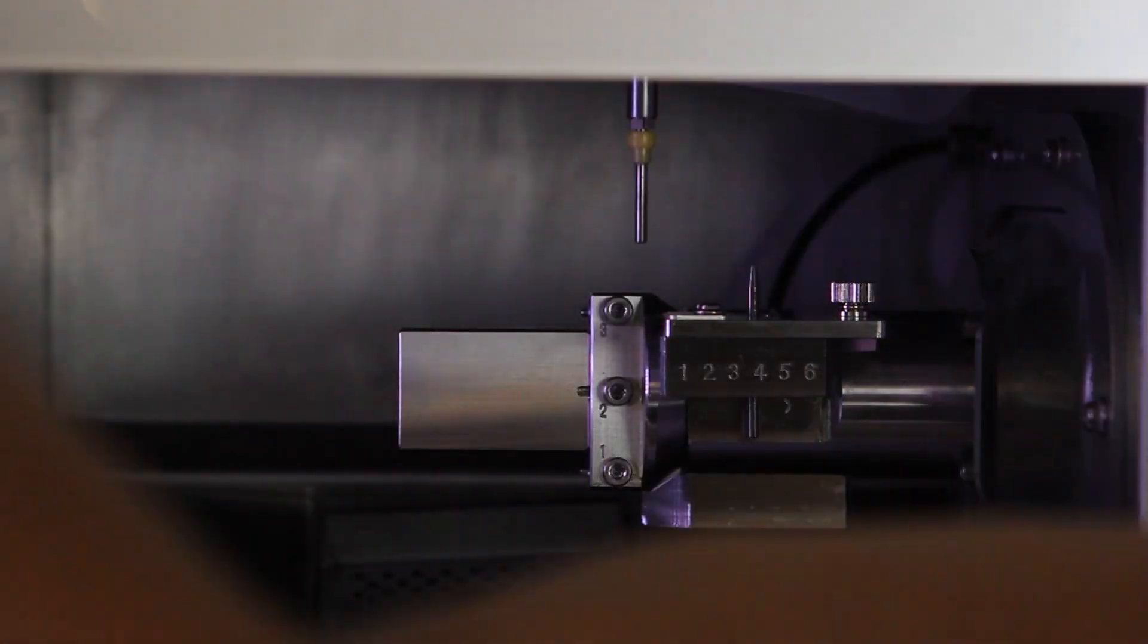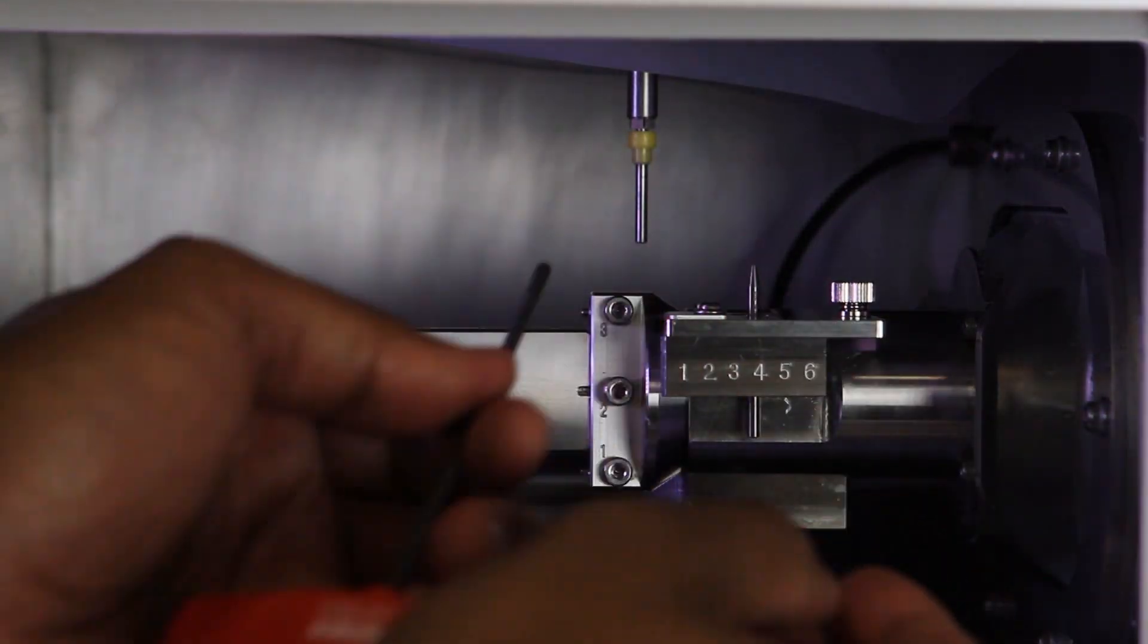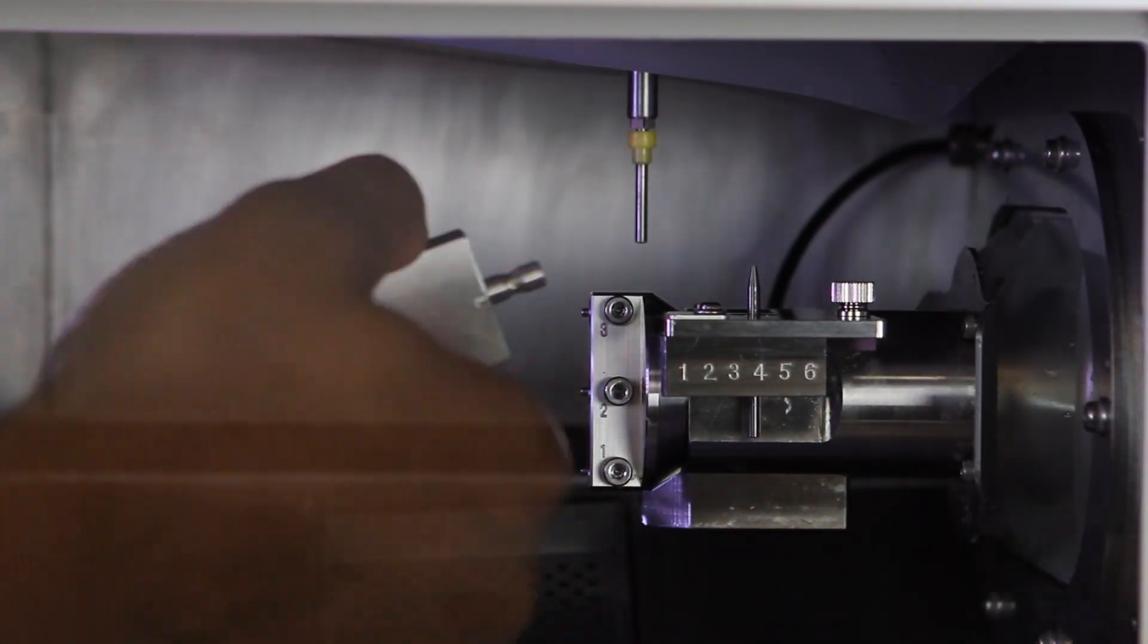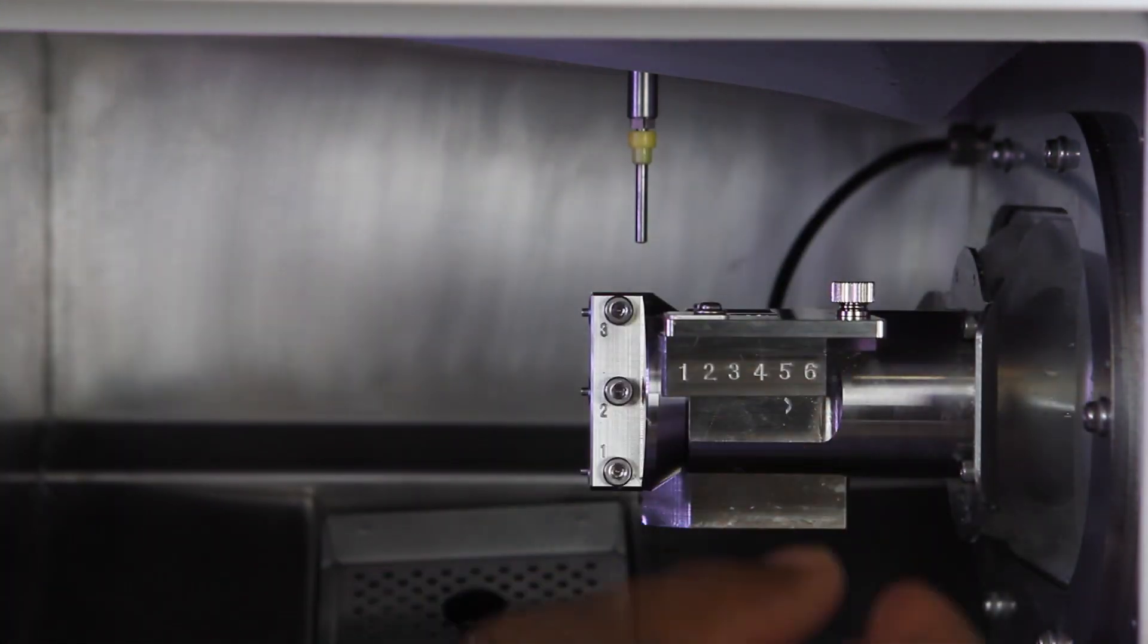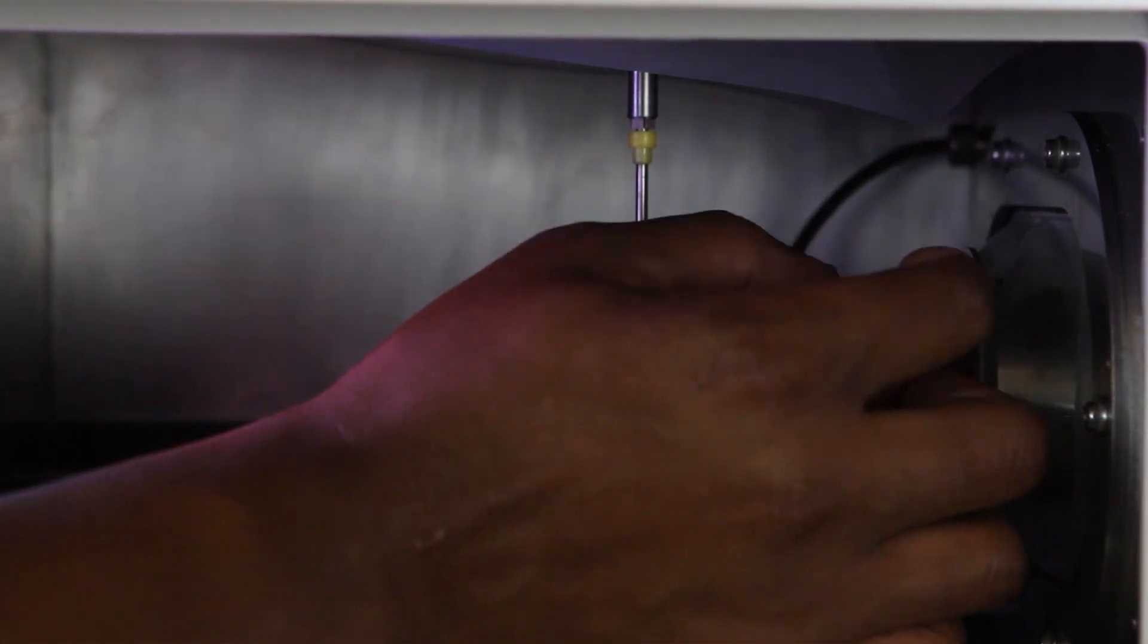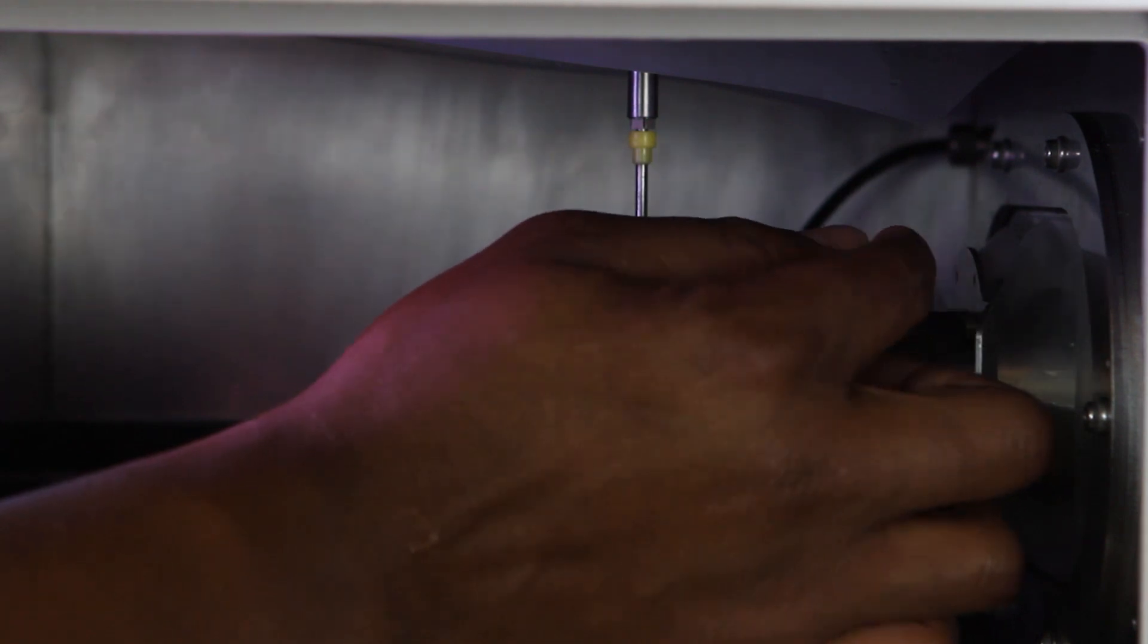Open the front cover and remove the automatic correction jig from the mounting part. Then, remove the detection pin and ATC magazine correction jig from the top of the rotary axis and close the front cover.